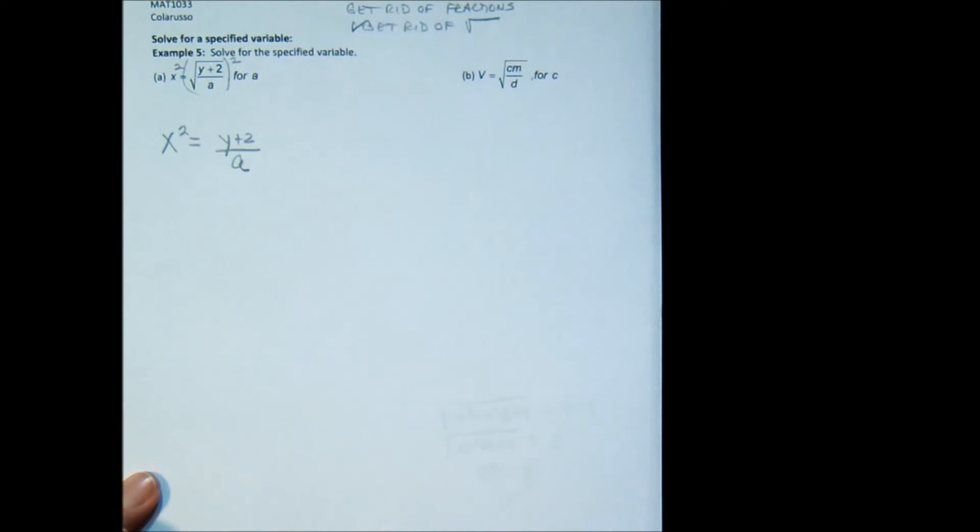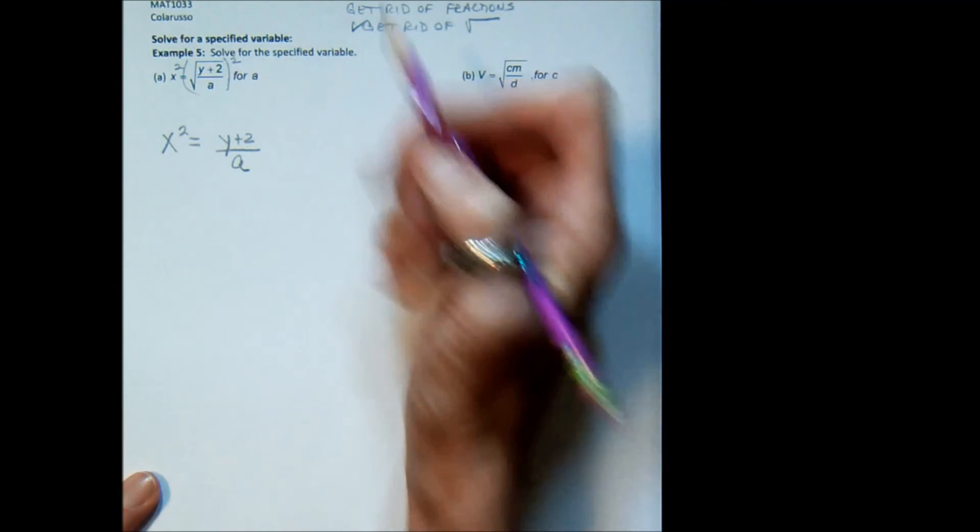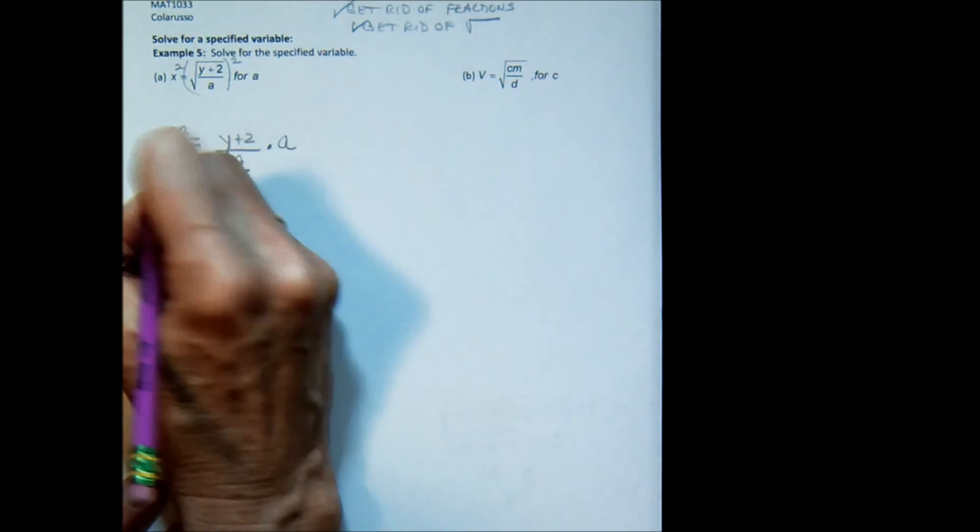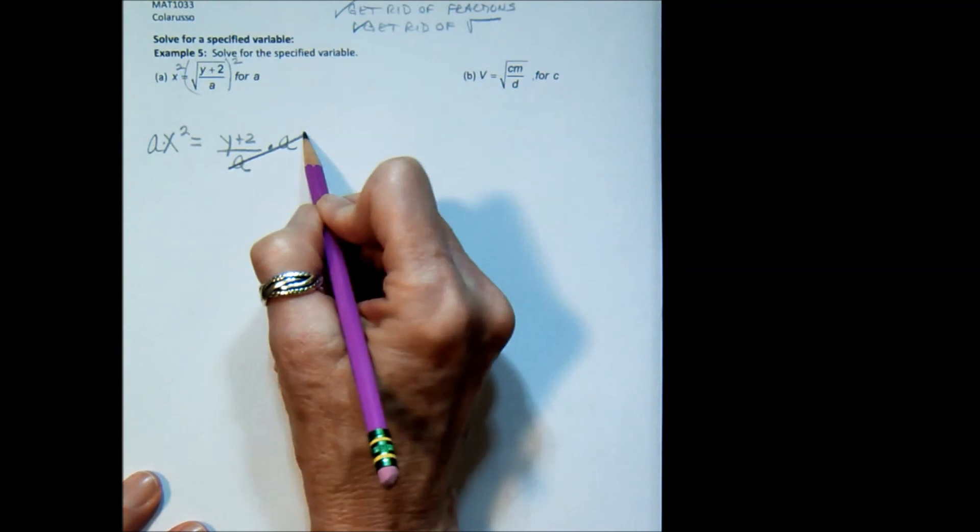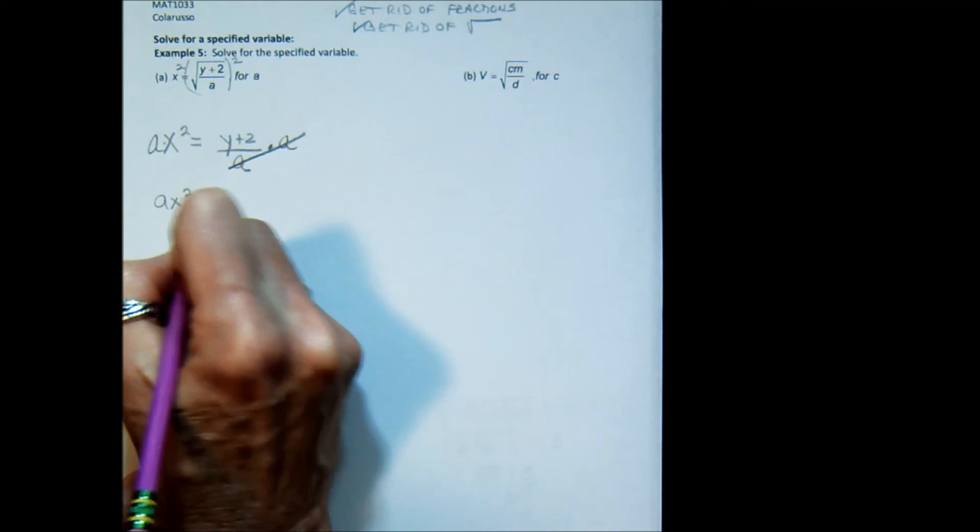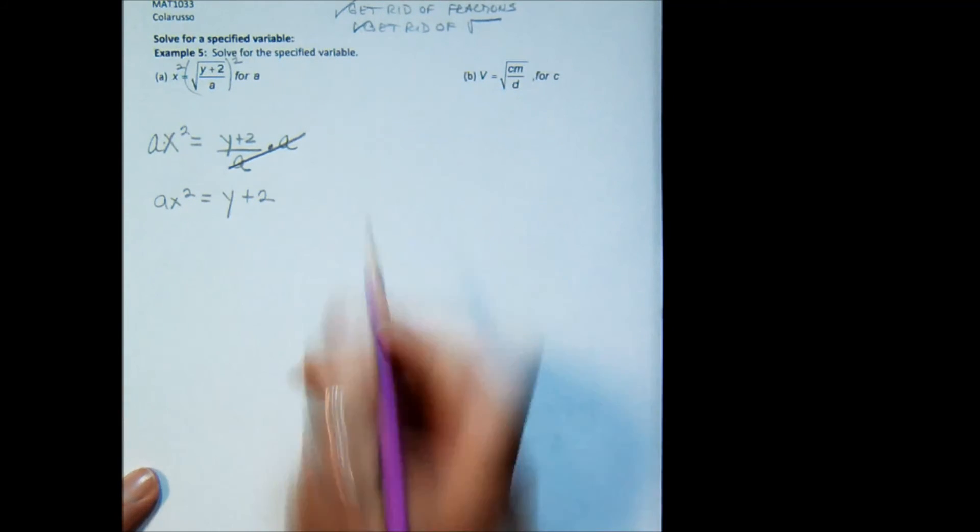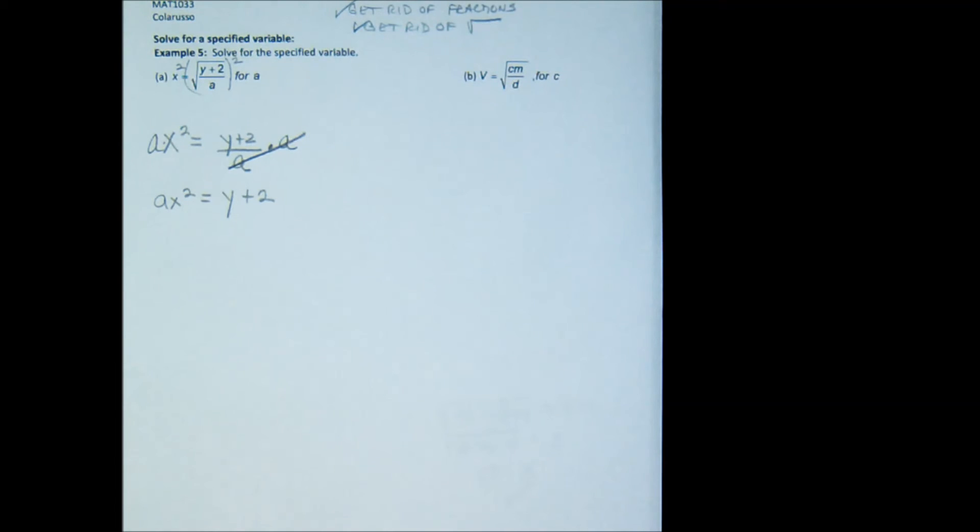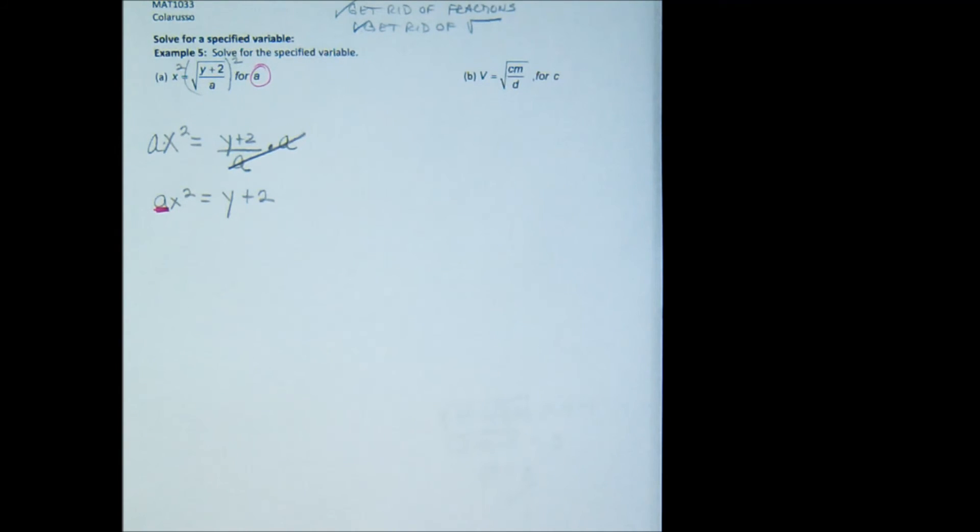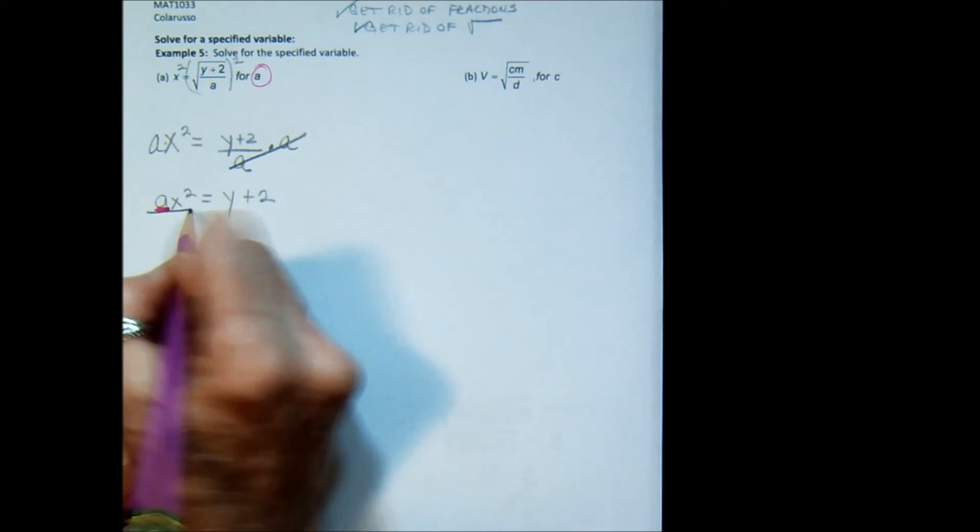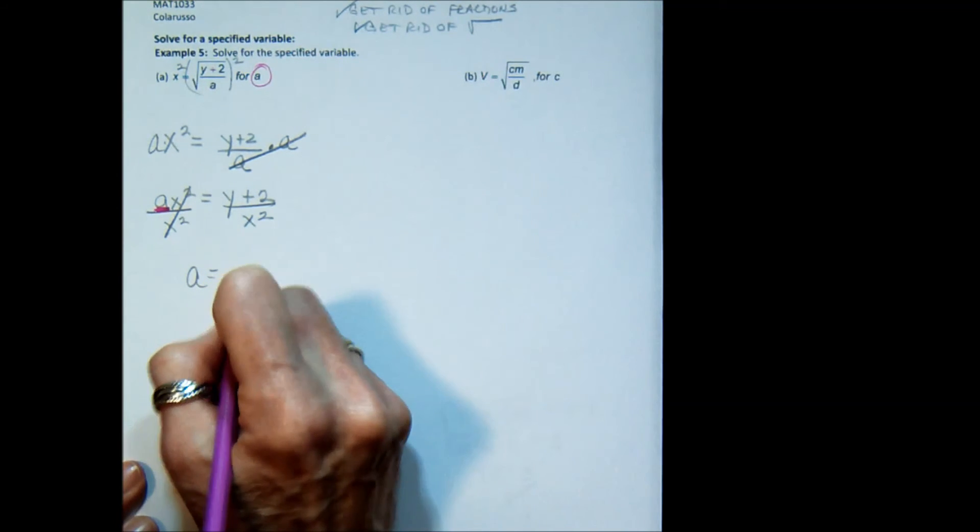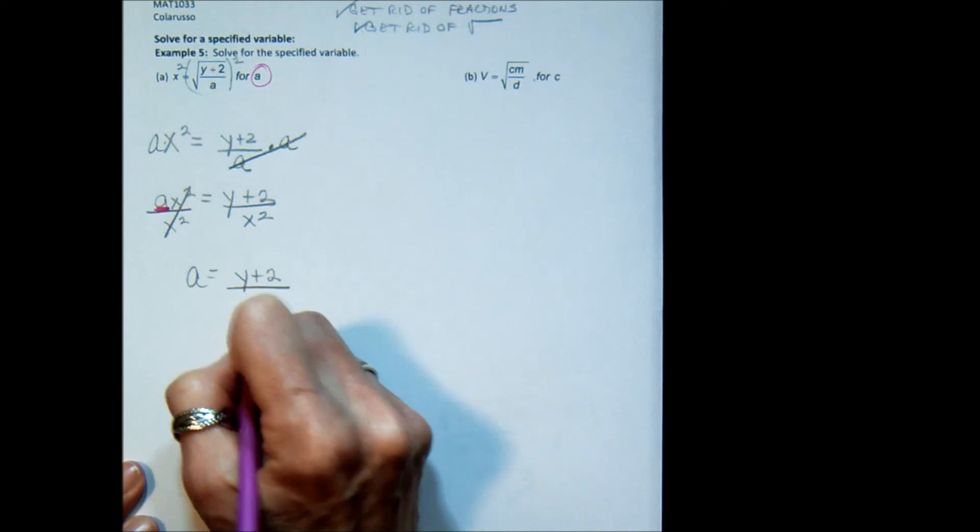Now I need to get rid of the fraction. And I do that by multiplying both sides of my equation by a, which causes that to cross cancel. I have ax squared equals y plus 2. Now let's find the variable that we are looking for. We're looking for a. Here it is. So the only thing left to do is divide by its coefficient. And I get a equals y plus 2 over x squared.